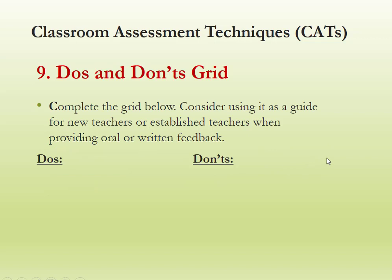The eighth technique is the 3-2-1 countdown. We ask three things you didn't know before, two things that surprised you about this topic, and one thing you want to start doing based on what you've learned. This can be done at the end of a chapter or after a couple of weeks. The ninth technique is the do's and don'ts grid — asking students to complete a grid considering what a teacher should and shouldn't do, for example during assessment. This measures higher-order thinking: analysis and evaluation skills, because differentiating right from wrong demonstrates cognitive levels of analysis and evaluation.